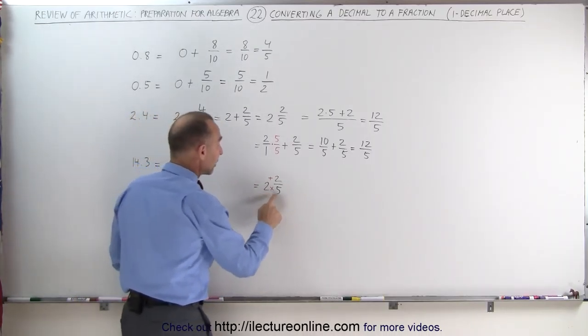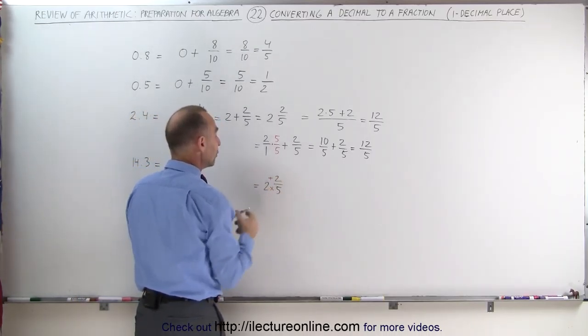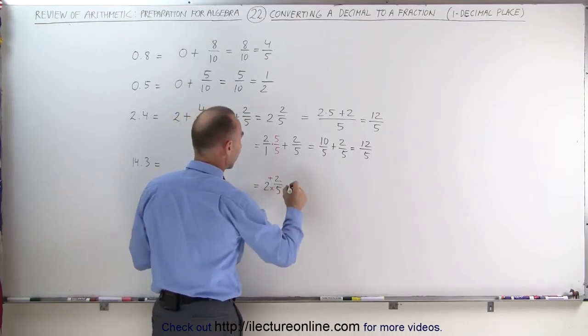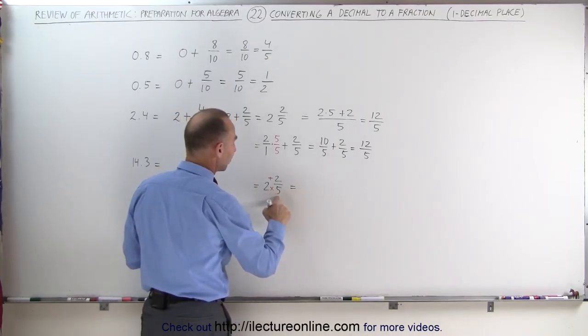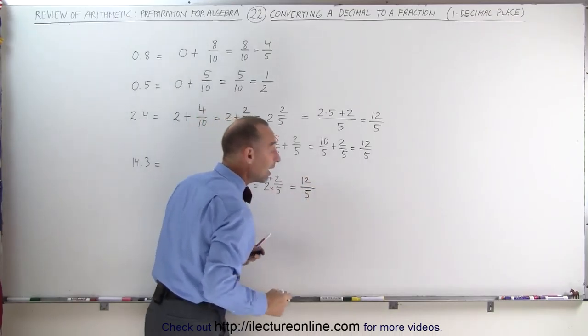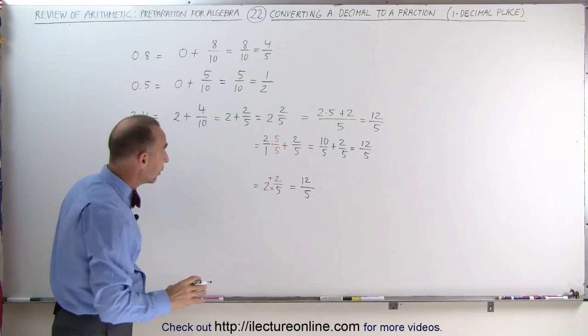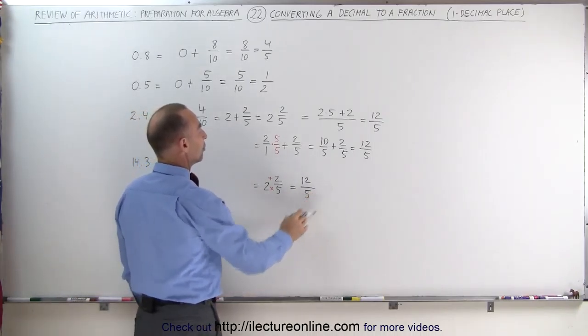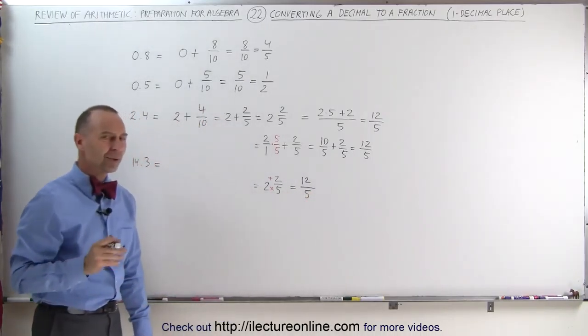Now what you do is you multiply 2 times 5 and add 2 to that and write that in the numerator. So this becomes 2 times 5, which is 10, plus 2, which is 12, and you divide it by the denominator 5. That's how you very quickly turn a mixed number into an improper fraction. Pretty slick, huh?